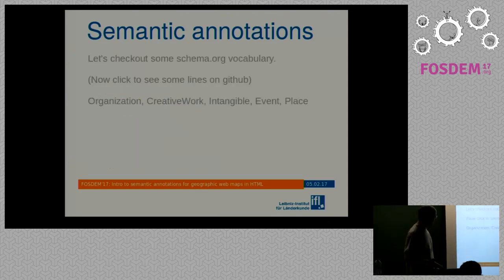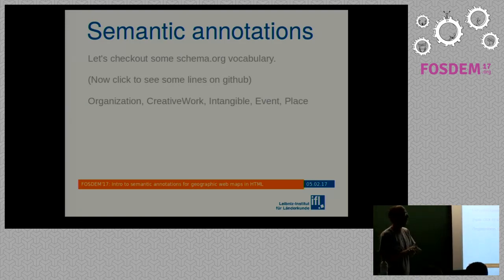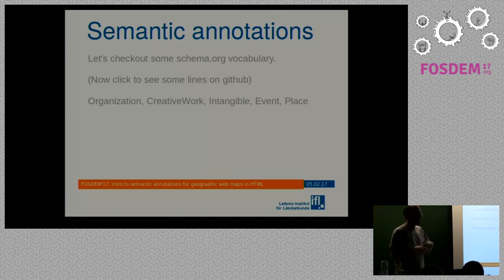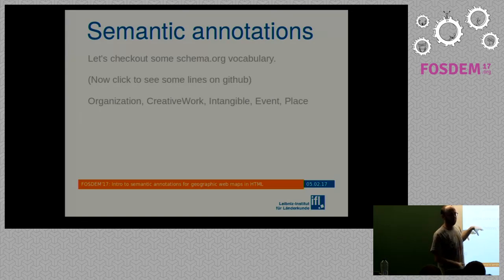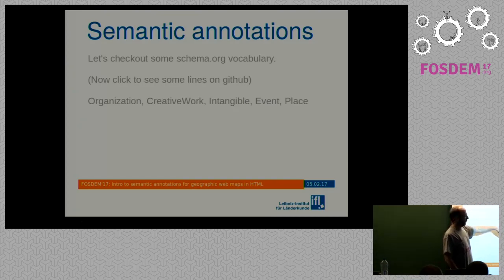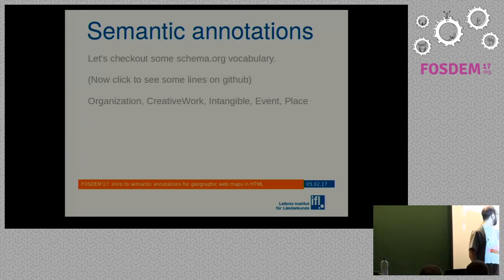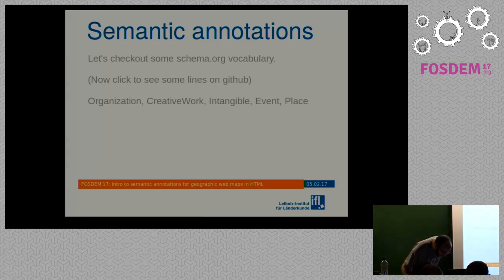When talking about semantic annotations on maps, I decided to use the schema.org vocabulary, because it tries to describe everyday life concepts using very abstract entities. For example: organizations — from universities to businesses; creative works — books, articles, media files; intangible things, which have no material existence; events; and places. It's a hierarchical taxonomy for describing the world.